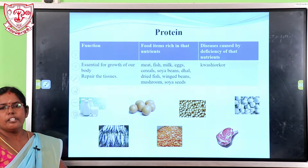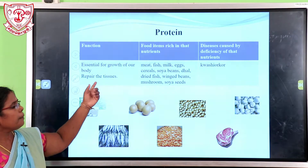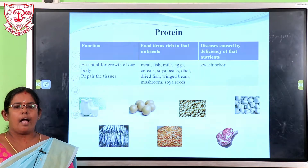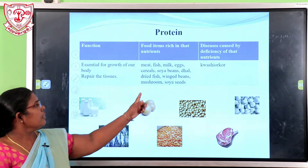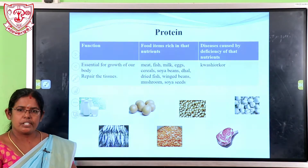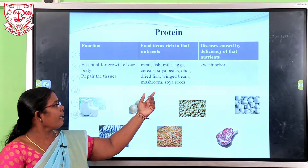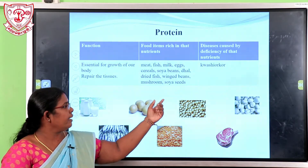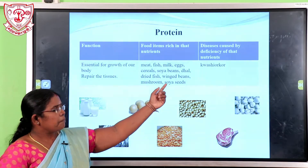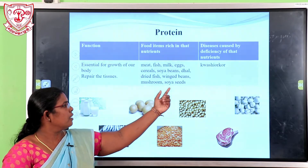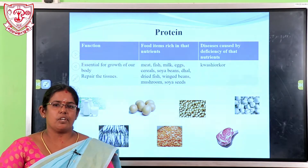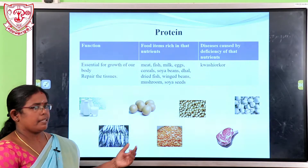The second nutrition is protein. Protein is essential for the growth of the body and to repair tissues. Food items rich in protein include beans, mushrooms, and soya seeds. The disease caused by deficiency of protein is kwashiorkor.